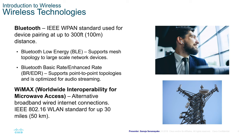Bluetooth is short range and typically used to connect personal devices but can also be used for point-to-point topologies. WiMAX is Worldwide Interoperability for Microwave Access and can connect systems up to 30 miles or 50 kilometers apart. Bluetooth is shown connecting something like an earbud device, while WiMAX uses large antennas communicating over those distances.